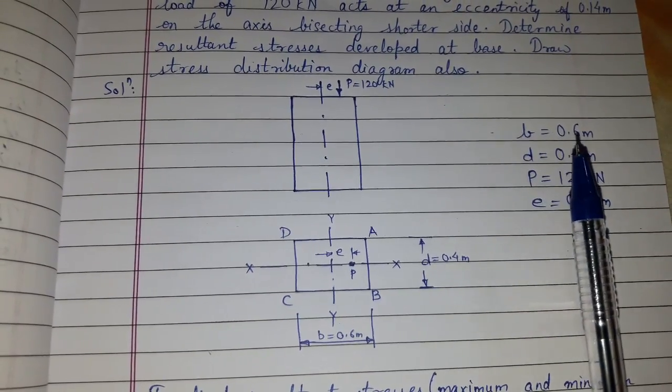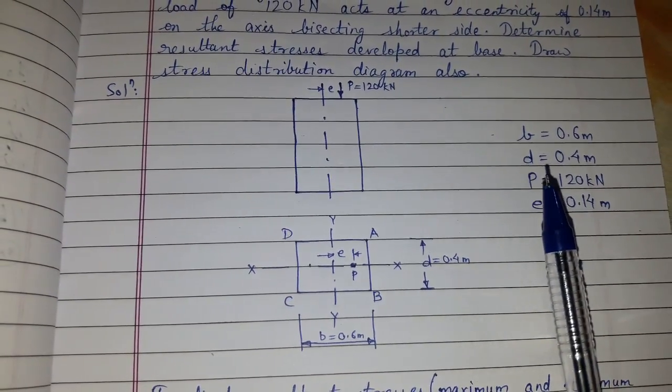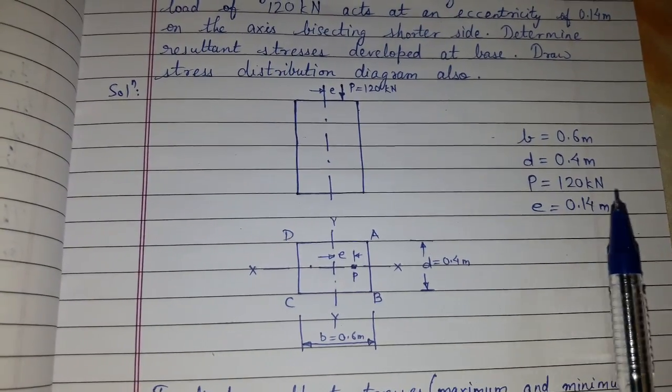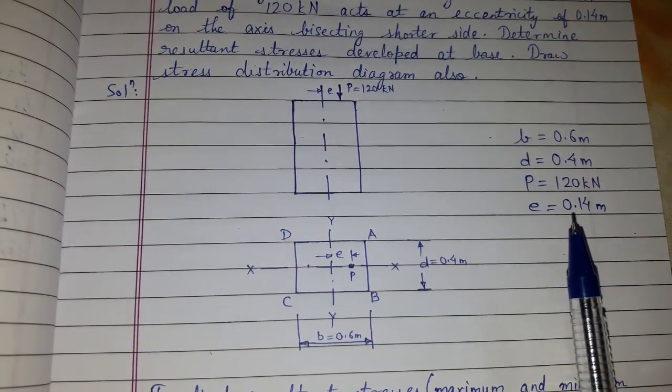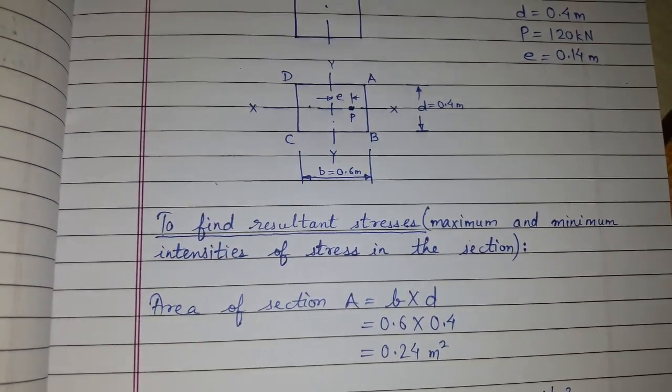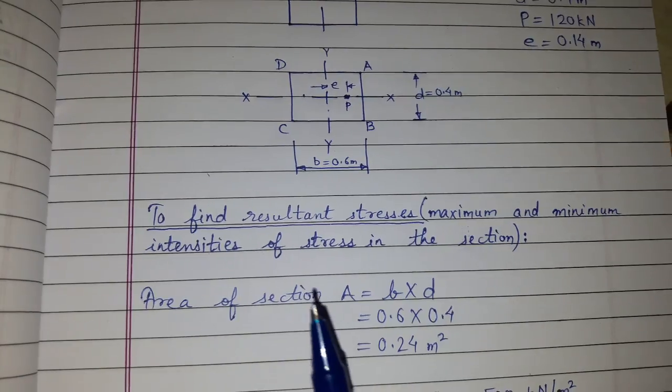Now, B equals 0.6 meter, D equals 0.4 meter, P equals 120 kN, E that is eccentricity at 0.14 meter. We need to find the resultant stresses, that is the maximum and minimum intensity of stresses in the section.